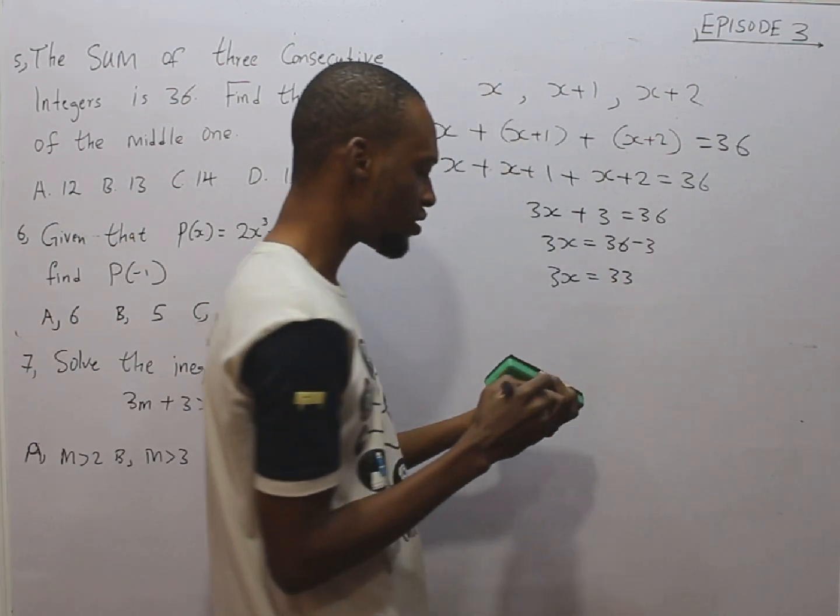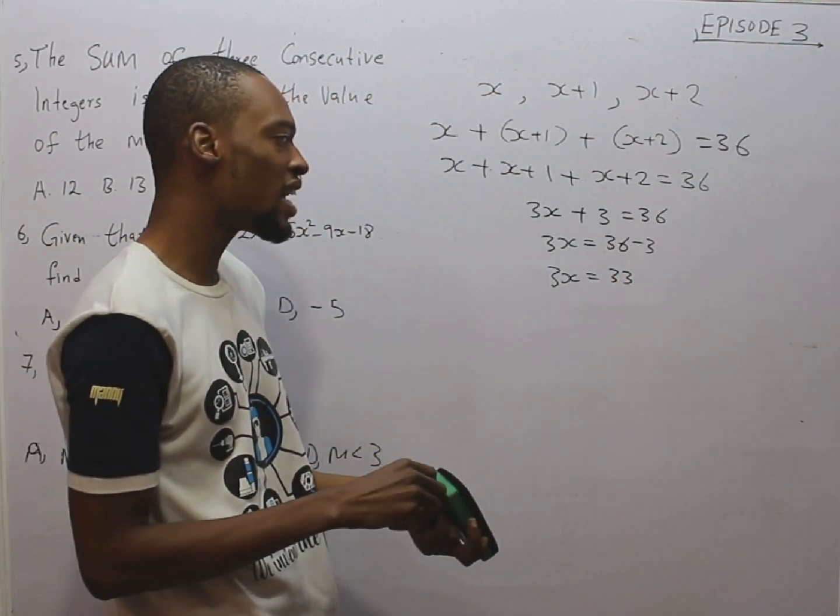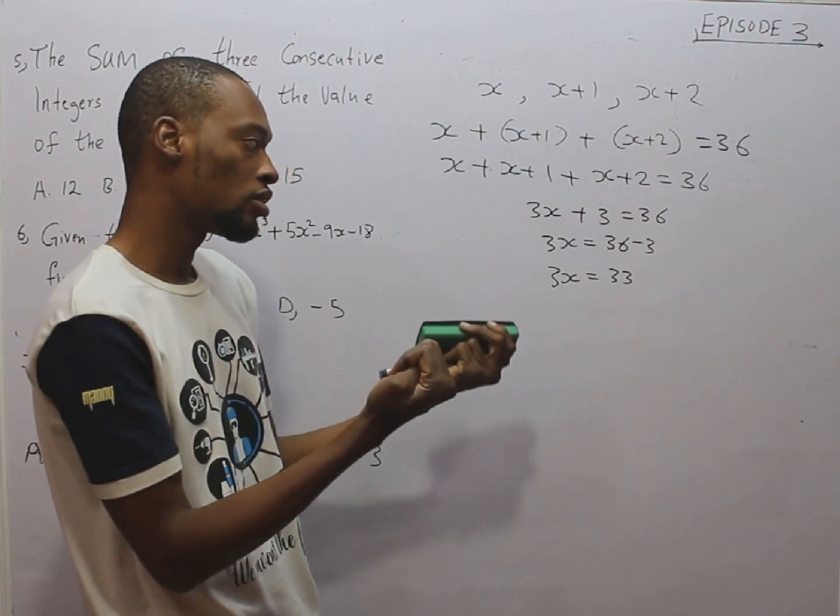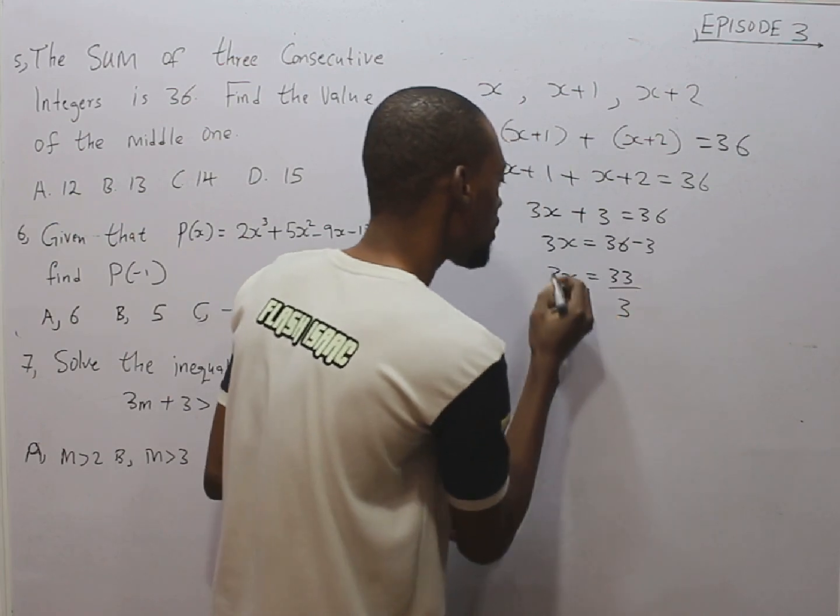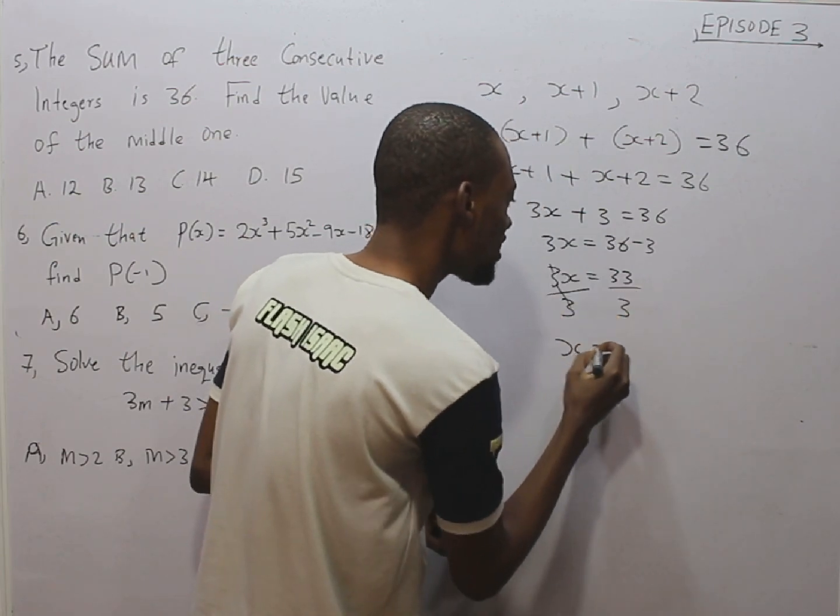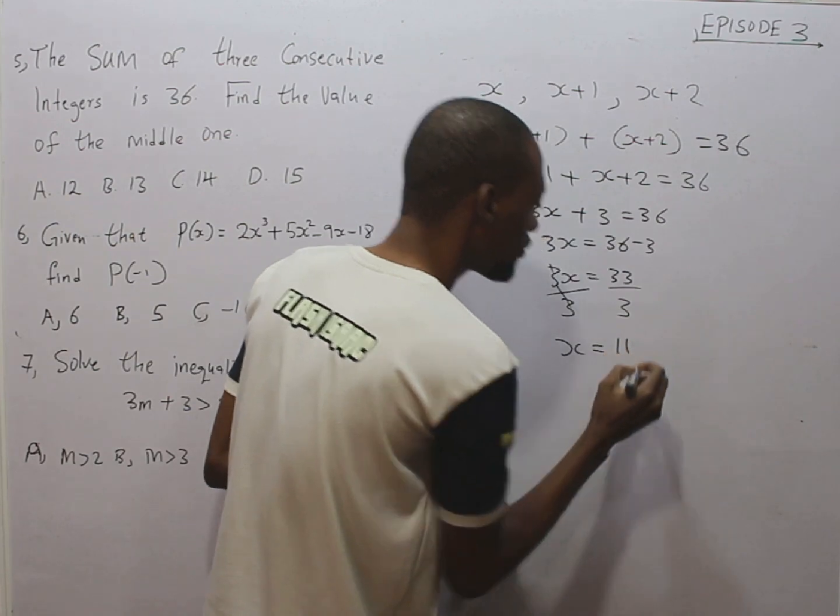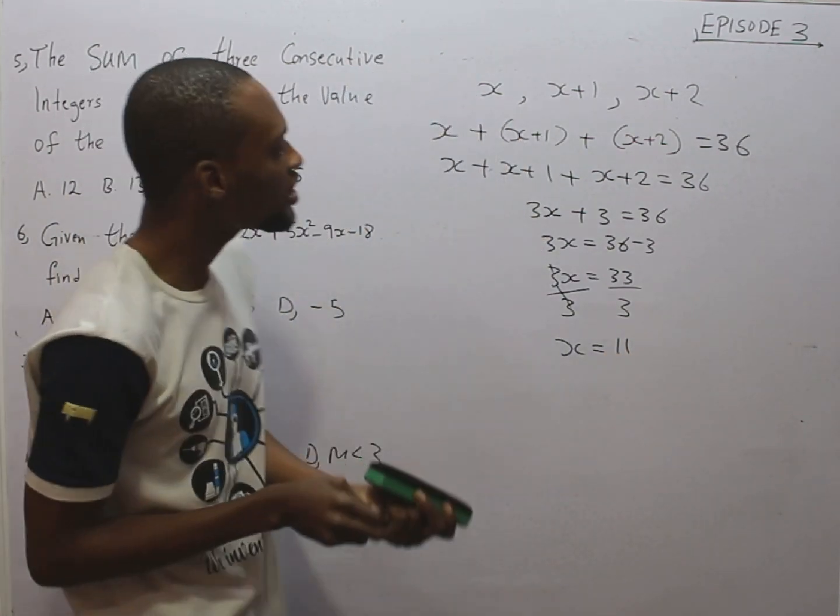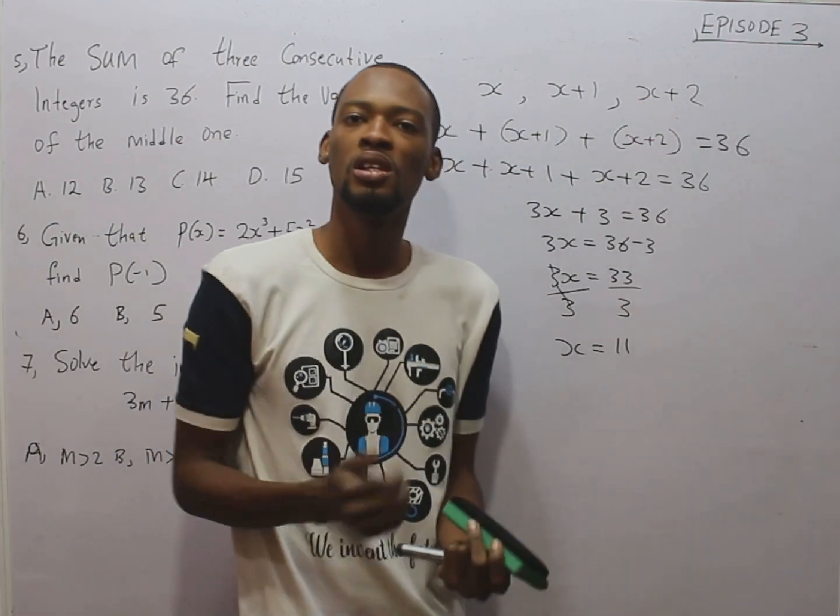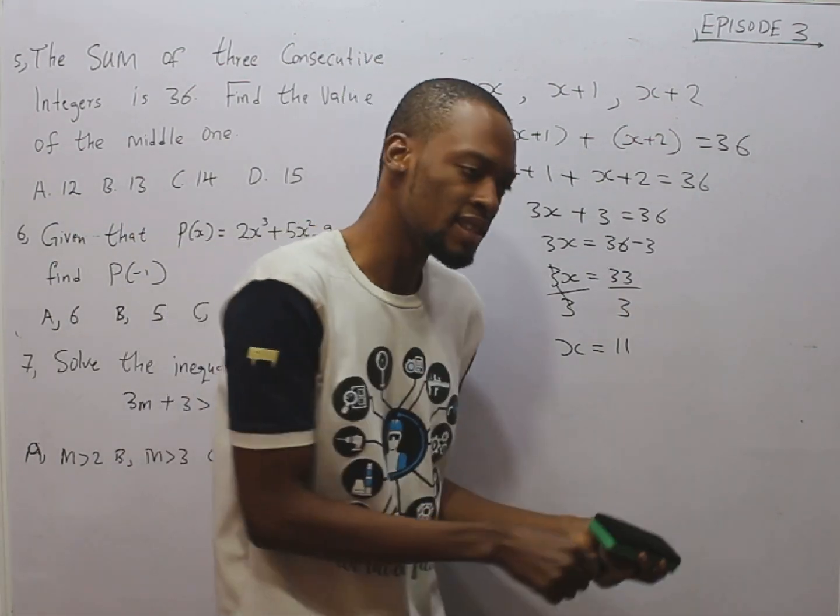If 3x is 33, to get x, we divide both sides by 3, right? So, this divided by 3, this divided by 3. 3 cancels 3. x is simply equals 11. 33 divided by 3 is 11. Is 11 the answer? No. 11 is the value of x.